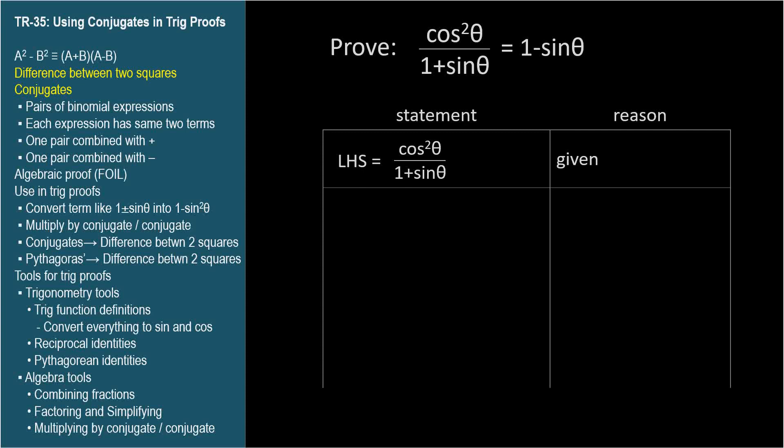So, in this case, we're going to multiply the left-hand side by a unit fraction. We'll let the fraction's numerator and denominator be the conjugate of the binomial term. Since the left-hand side has the binomial 1 plus sine theta, we multiply the left-hand side by 1 minus sine theta over 1 minus sine theta. So, we get cosine squared theta times 1 minus sine theta divided by 1 plus sine theta times 1 minus sine theta.